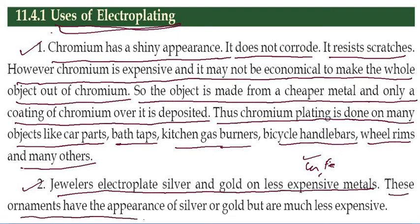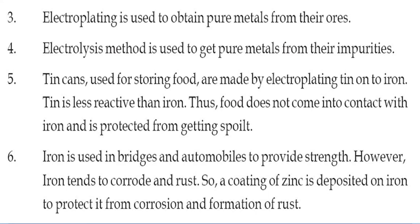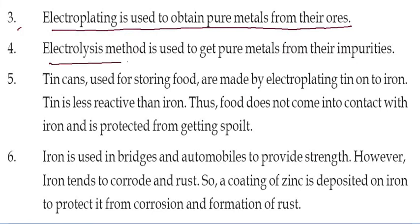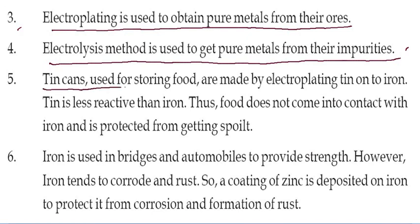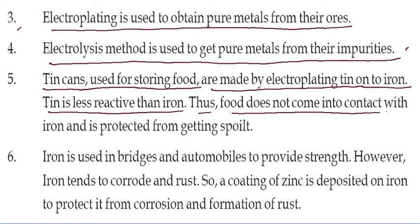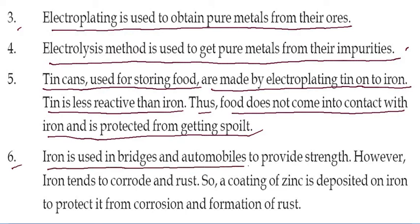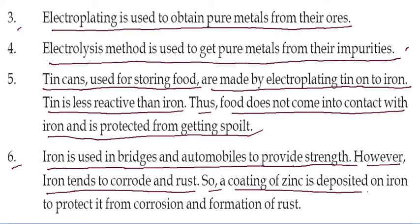These ornaments have the appearance of silver and gold but are much less expensive. Artificial geology (electrorefining) is used to get pure metal from impurities. Tin cans used for storing food are made by electroplating tin onto iron, as tin is less reactive than iron, so food does not come into contact with iron and is protected from spoiling. Iron is used in bridges and automobiles for strength, but since iron corrodes and rusts, a coating of zinc is deposited on it to protect from corrosion.